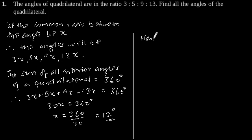Hence, the angles are: 3x = 3 × 12 = 36 degrees.